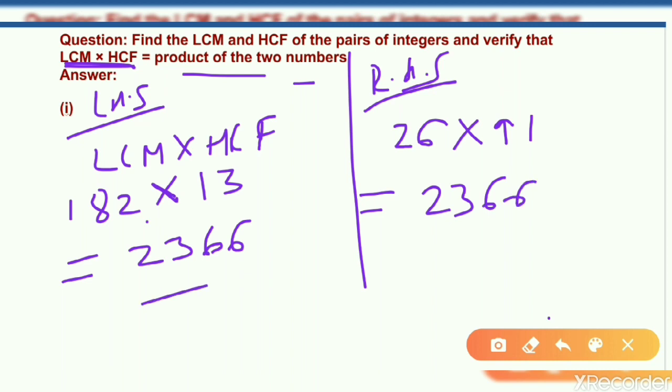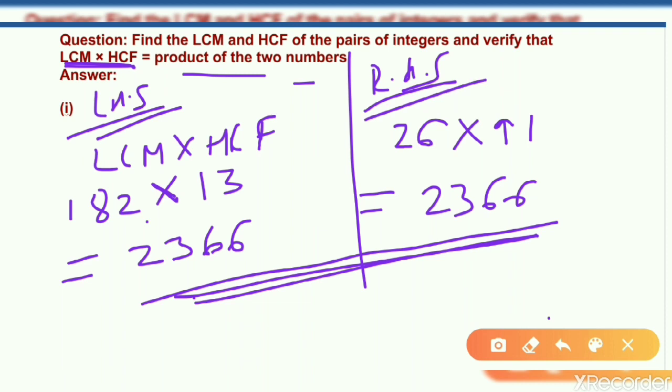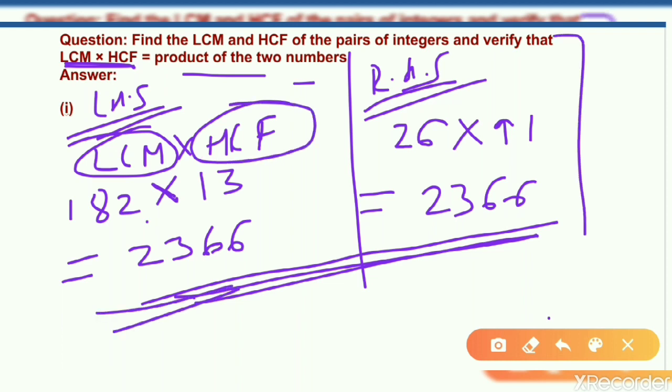So here the verification is complete. Students, if left hand side and right hand side के बराबर नहीं होगा, इसका मतलब या तो हमारा LCM गलत आया या HCF गलत आया. So these are the steps to find the problems which are based on the fundamental theorem of arithmetic.